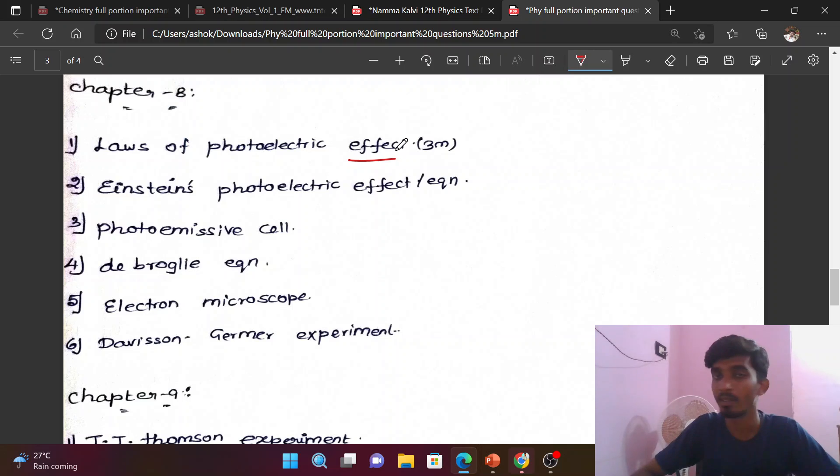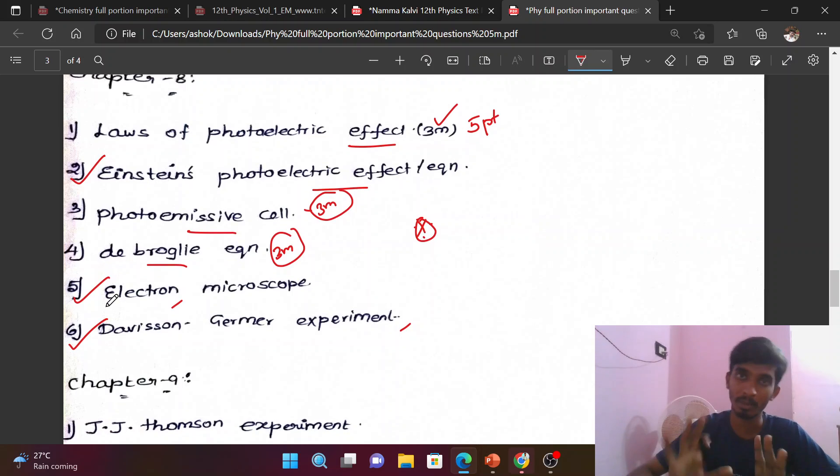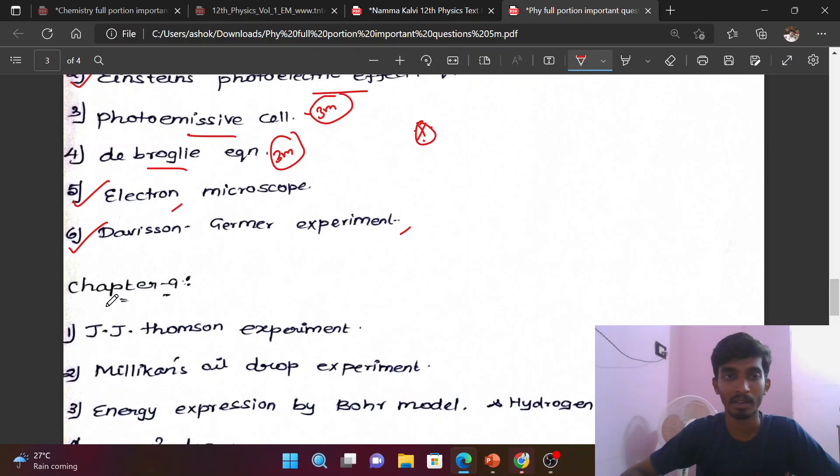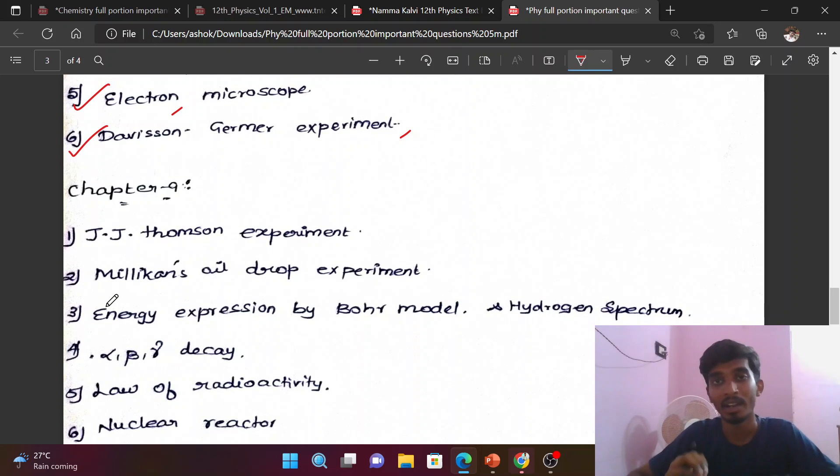Chapter 8: Photoelectric effect - this can be 3 marks but mostly appears as 5 marks. Einstein's photoelectric equation and photocells are important. De Broglie wavelength is rare for 5 marks but could be 3 marks. Electron microscope, Davisson-Germer experiment - these are important 5-mark questions. Sometimes they appear as 3 marks but could be 5 marks.